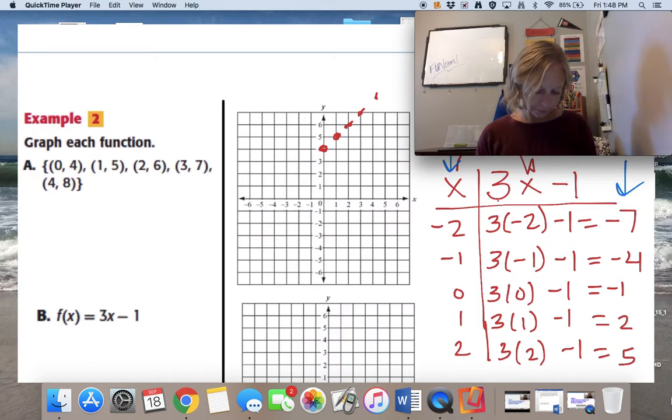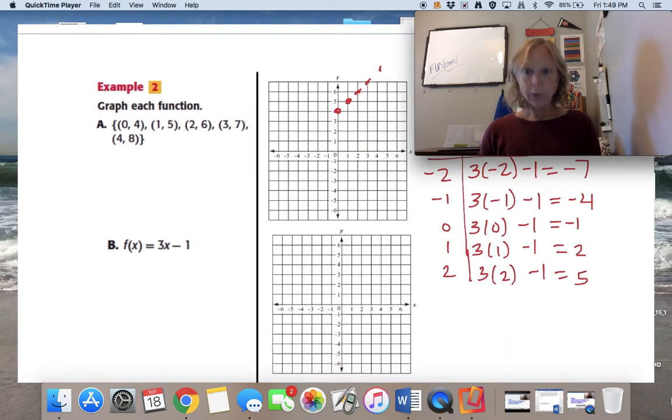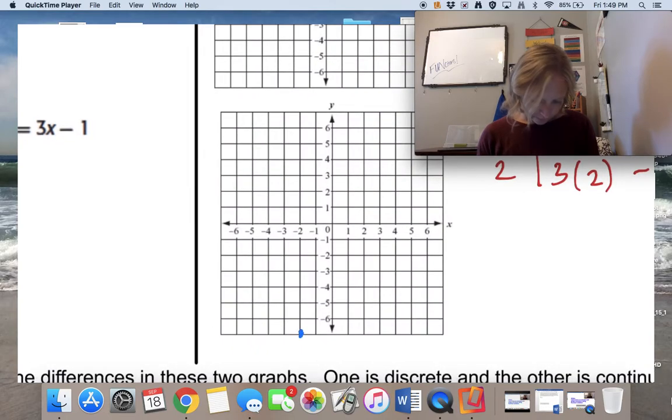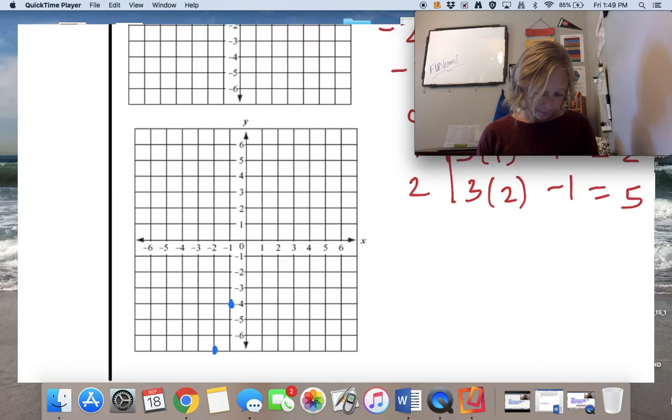Now I know my x values and I know my y values, so I can plot these on my graph. Over negative 2, down 7. So it looks like I'm going to have to slide my graph down a little bit. Hopefully we'll still be able to see. So over negative 2, down 7. The next one was negative 1, negative 4. 0, negative 1. 1, 2. And then 2, 5.